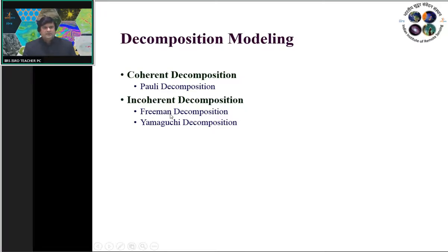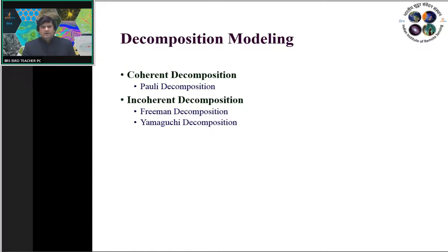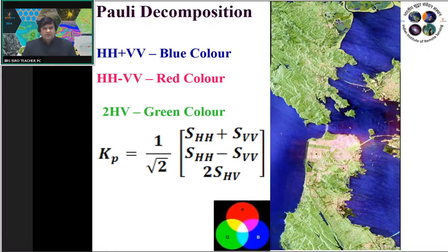Why is the Pauli feature vector called coherent decomposition? In the Pauli basis, only one type of scattering element is used to derive one scattering element: for surface scattering we use like-polarimetric channels (HH + VV); for double bounce we again use like-polarimetric channels; for volume scattering we use the cross-polarimetric channel. The coherency matrix-based modeling approach is called incoherent decomposition because combinations of scattering elements are used together to reliably retrieve mixed scattering within heterogeneous resolution cells.